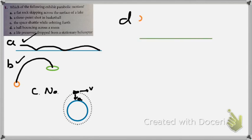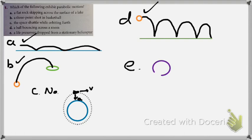And then D, a ball bouncing across the room. While it's bouncing, when it's in the air, it is definitely under parabolic motion, though my picture isn't perfectly parabolic. But it is parabolic motion. And a life preserver dropped from a stationary helicopter. It's in the air, that's true. But the acceleration and the velocity are both straight down. There's no X component. So there's going to be no parabolic motion.